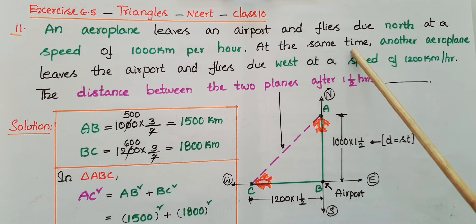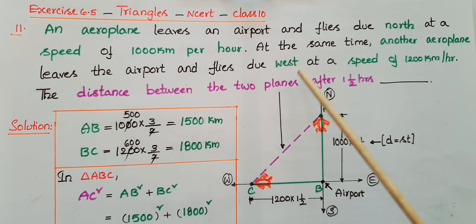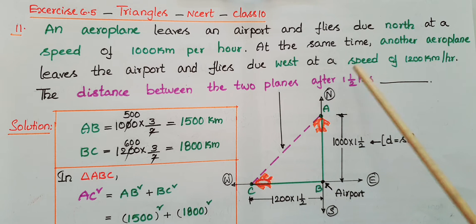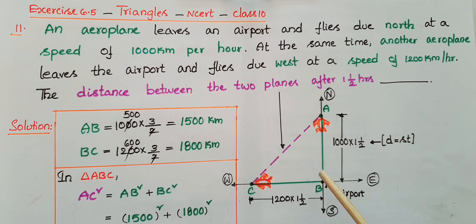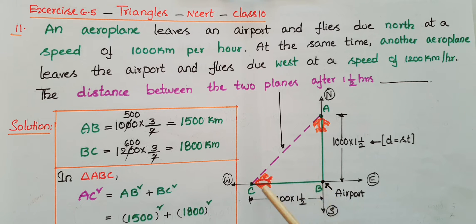At the same time, another aeroplane leaves the airport and flies due west at a speed of 1200 km per hour. So that aeroplane travels in the west direction at 1200 km per hour, meaning in 1 hour it travels 1200 km.